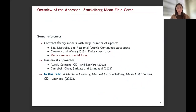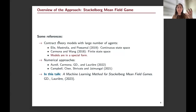Here are some related references. For contract theory type models with a large number of agents, Elie, Mastroly and Possamai have a continuous state space version, and Carmona and Weng have a finite state space version. On the numerical side for the machine learning approach, we have a previous paper looking at a finite state space case, and Campi, Tankov, and Warin have a paper solving the bi-level version. The difference between our previous paper and this one is that now we consider a more generalized model without requiring a contract theory-like form.